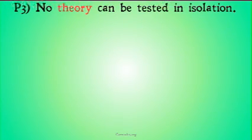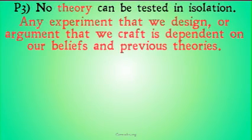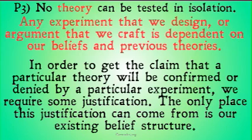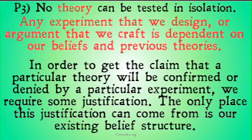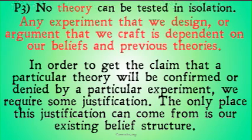And finally, premise 3: no theory can be tested in isolation. Any experiment that we design, or argument that we craft, is dependent on our beliefs and previous theories. In order to get the claim that a particular theory will be confirmed or denied by a particular experiment, we require some justification — and the only place this justification can come from is our existing belief structure. The only way we can justify the premise of T implies P is by using our existing theories. And those theories are just as much in question as the original theory we brought to the table to test. When we get a contradiction, we don't know if we should deny our original theory or instead deny those pre-existing conceptions and other theories that underlie our basic understanding of the way the world works.